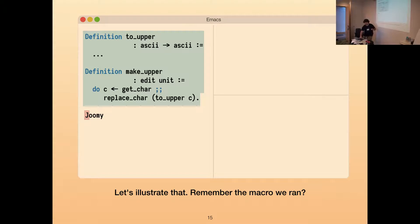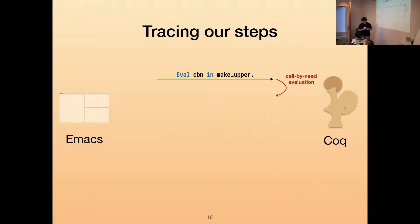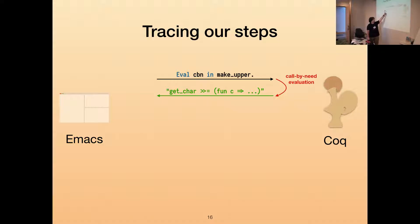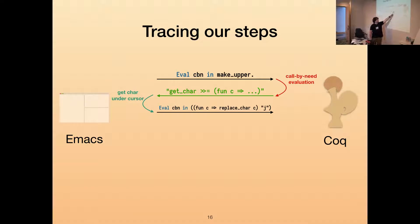Here's how running this macro works in the background. First, Emacs sends to Coq a vernacular command that says: evaluate make_upper, the macro we had, call-by-need. Coq evaluates it and sends back a string as output, because that's how Coq top works. It says the first thing in this is get_char, and then a monadic bind to some continuation. So Emacs looks at this, parses it, gets the character under the cursor — which was J — and sends back another vernacular command, applying the result of this string to the continuation function, and asks Coq to evaluate that.